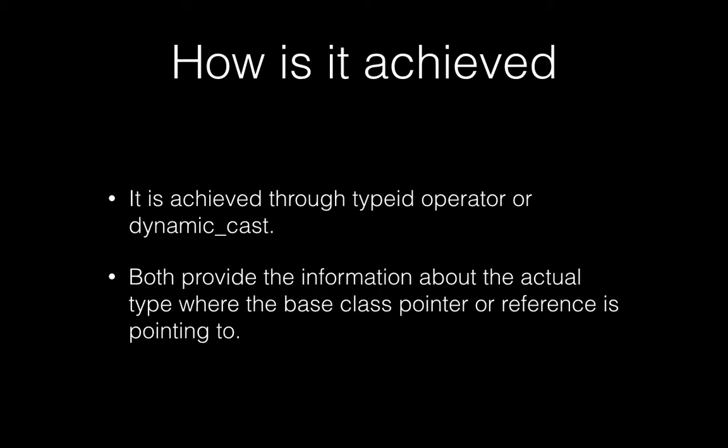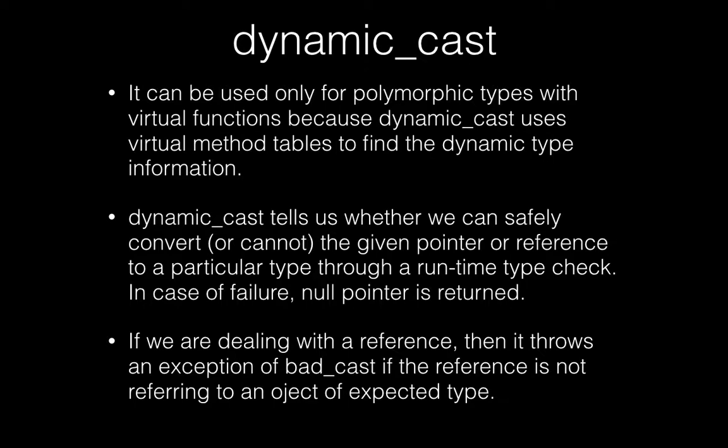RTTI is achieved through the typeid operator as well as the dynamic_cast operator. Both of them provide information about the actual type that a base class pointer or reference is pointing to. So RTTI can be used for both pointers and references.